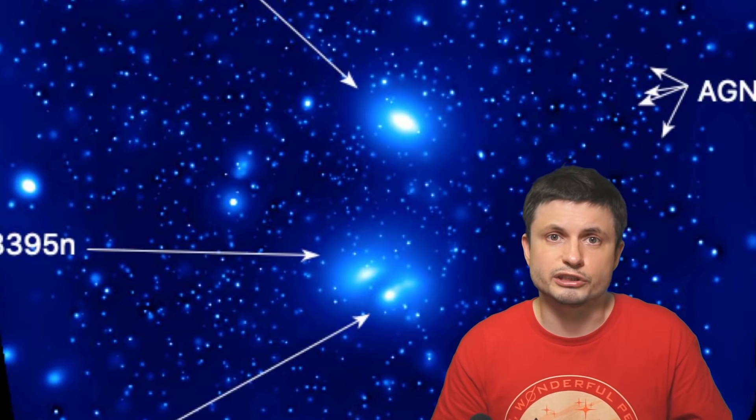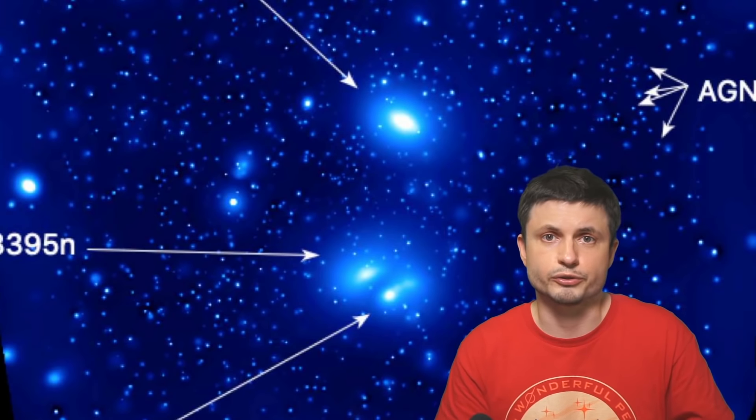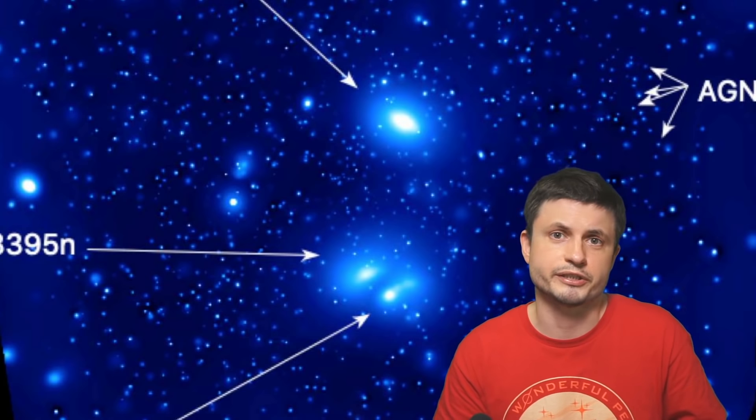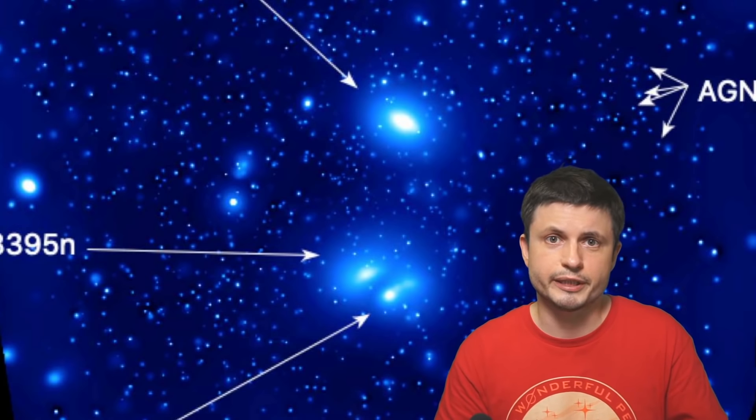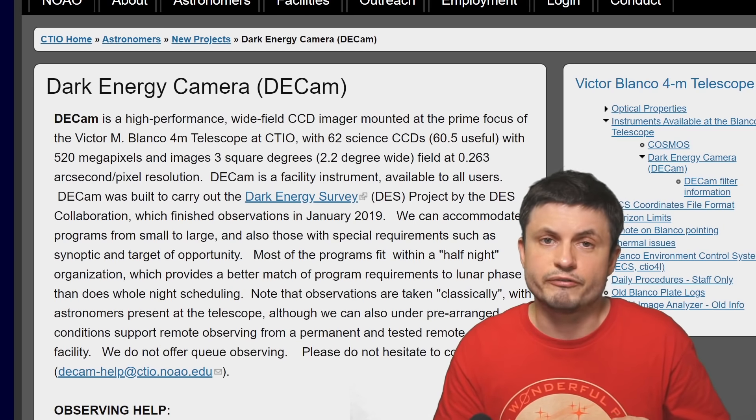This time, by using data from many other telescopes including infrared telescopes such as ASKAP in Australia, the Dark Energy Camera that provided optical observations, and the XMM-Newton that provided x-ray observations, the scientists were able to discover and describe a lot of interesting phenomena happening inside these galactic clusters.